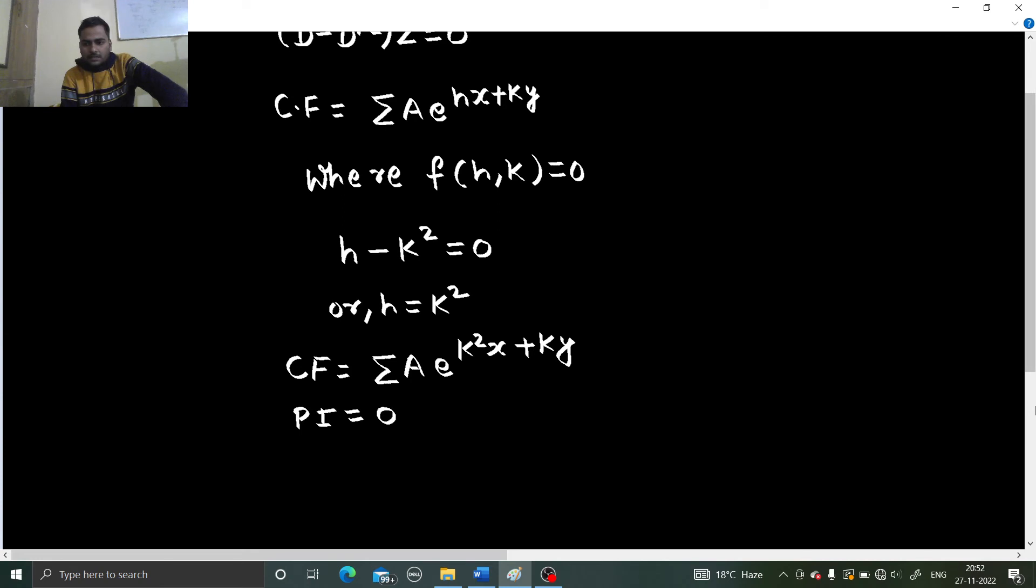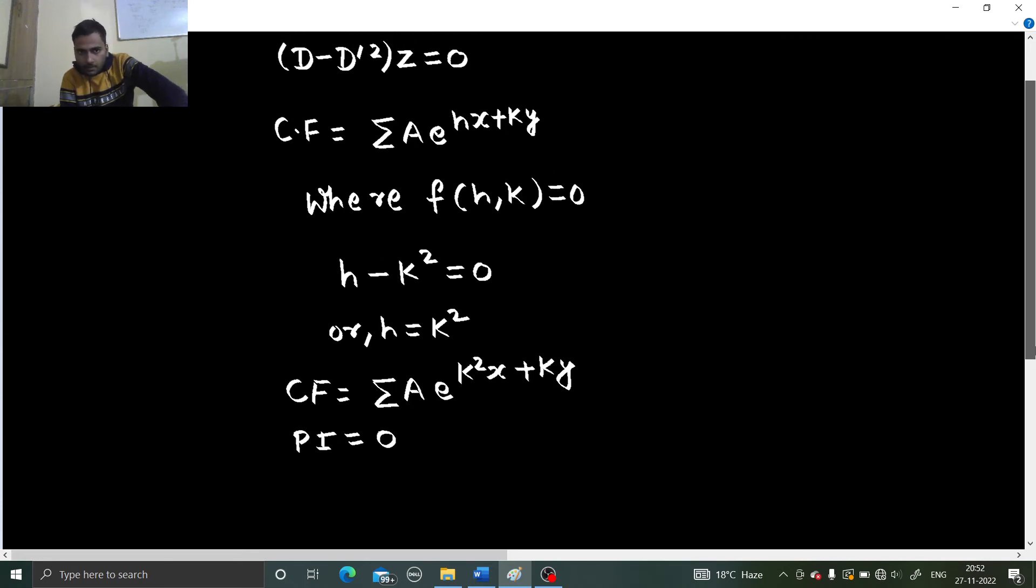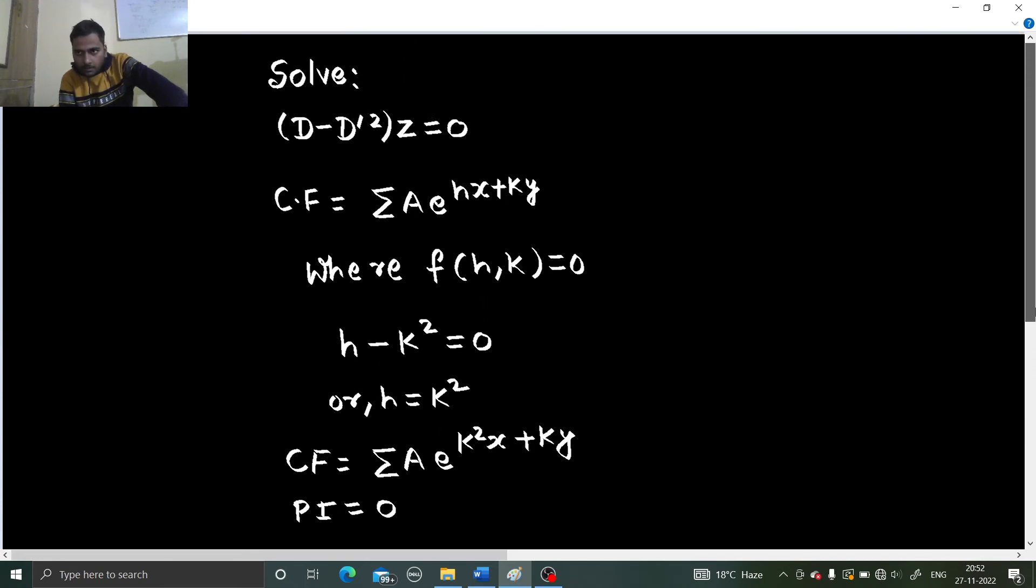Finally, we can write as we always do, z equals to cf plus of pi. So, your cf here is summation a e power k square x plus k y and pi is 0. This is your final solution for this problem.